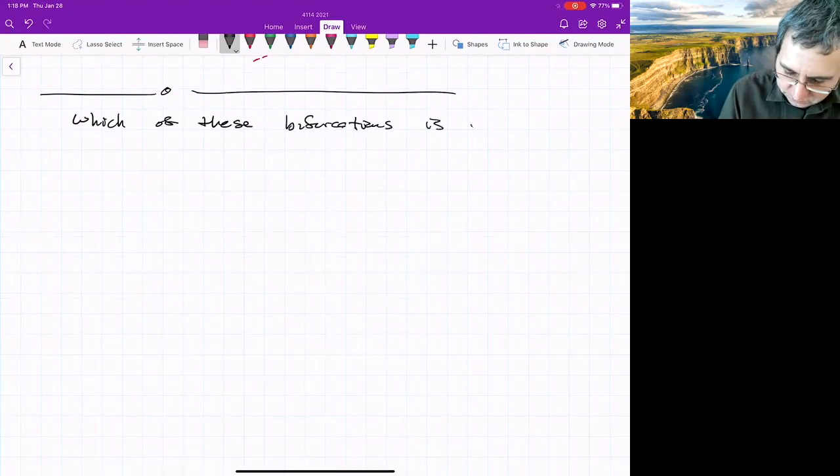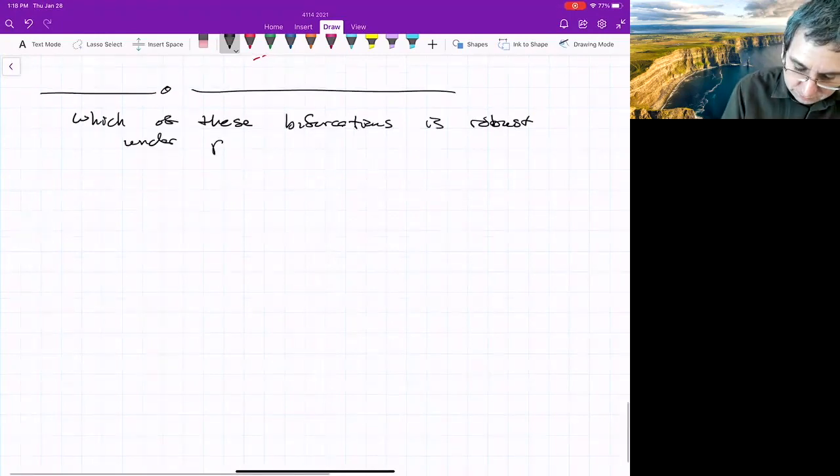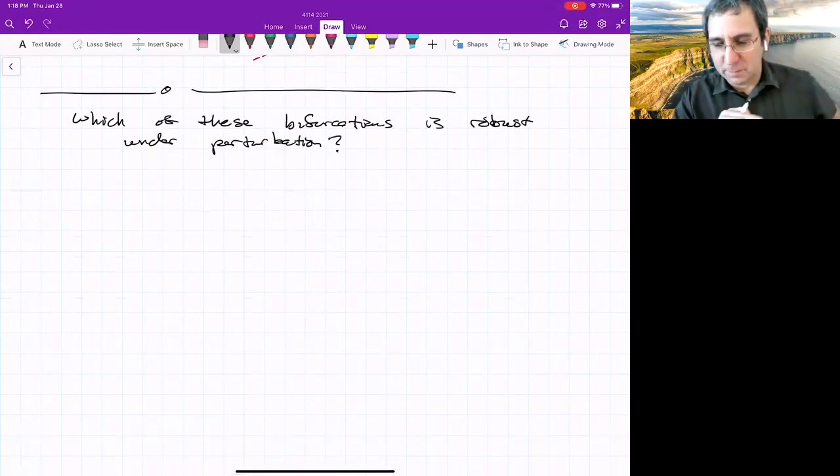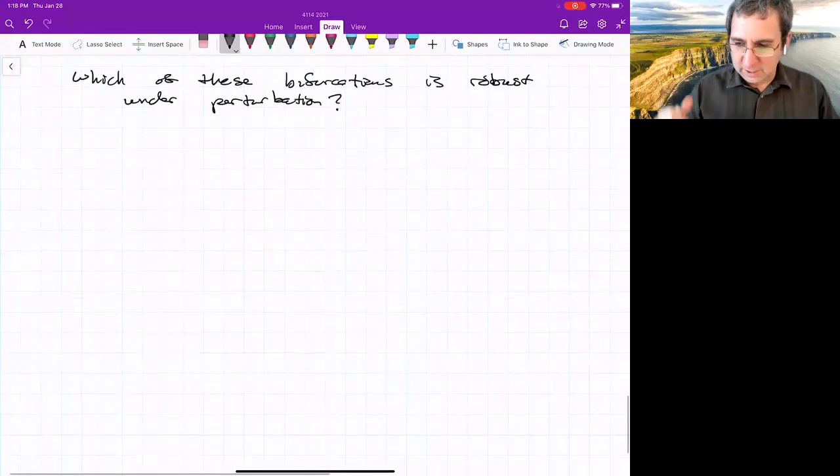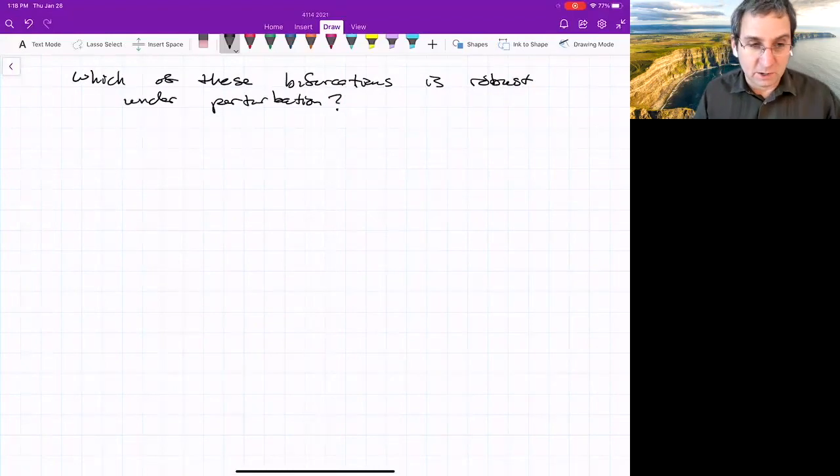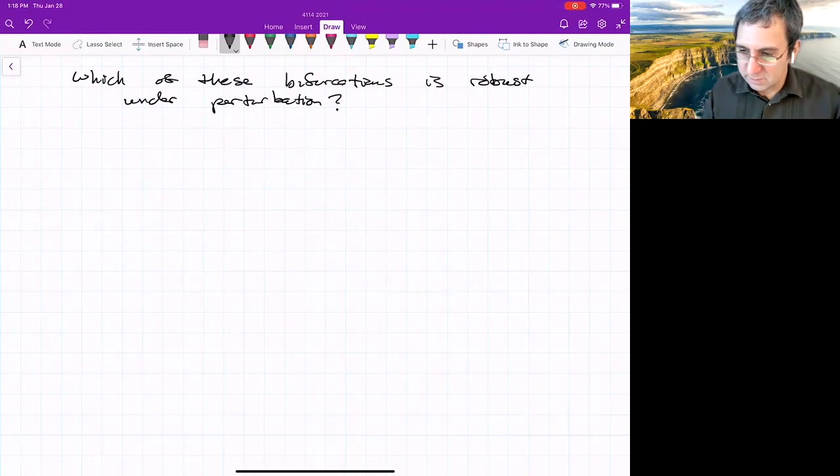Which of these bifurcations is robust under perturbation? Meaning if the mathematical structure changed a little bit, what would happen? So we'll look at them in turn. First, we'll look at the saddle node, and then we'll look at transcritical and pitchfork.